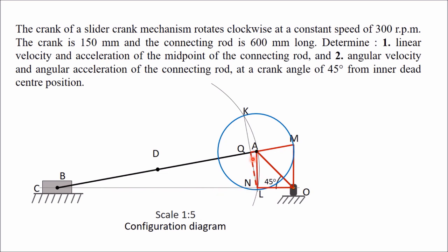AQ is the centripetal component and QN is the tangential component of acceleration of B with respect to A; AN is the resultant. To find acceleration of midpoint D, draw a horizontal line from D to locate the midpoint of AN, naming that point Y. OY represents the absolute acceleration of D.